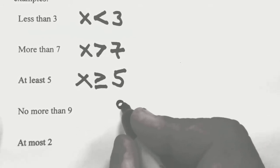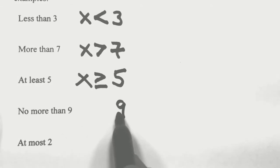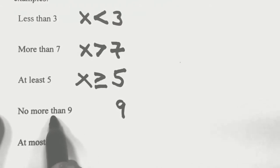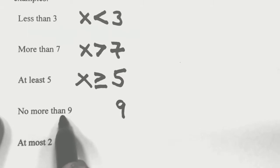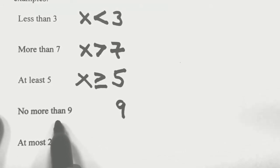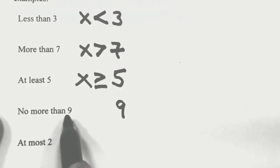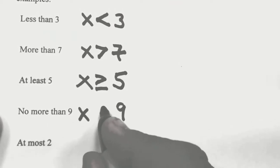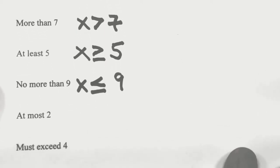No more than 9: we're referring to 9, and we cannot be more than 9. Can you be more than 9? No. Can you equal 9? Well, 9 equals 9 — that's not more than 9 — and our requirement is we cannot be more, so 9 would work. Can it be less? Well, if we're no more than 9, being less is okay. So we can be equal to 9 and smaller: x is less than or equal to 9.